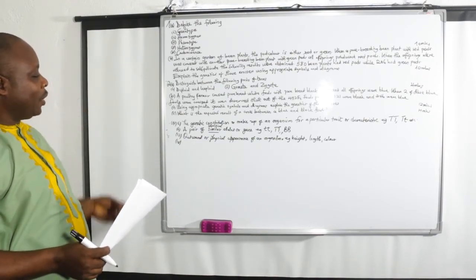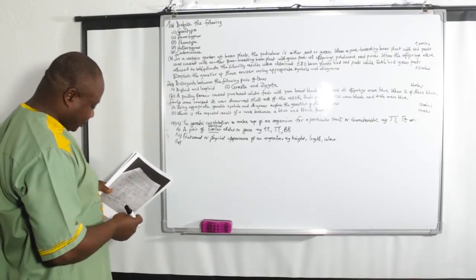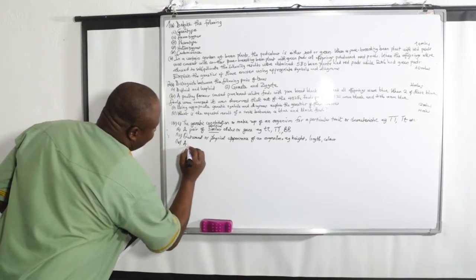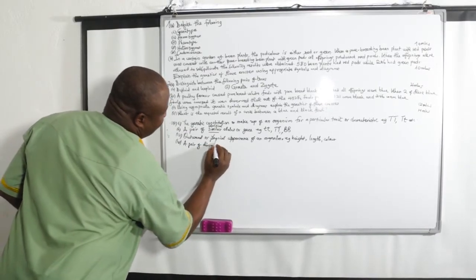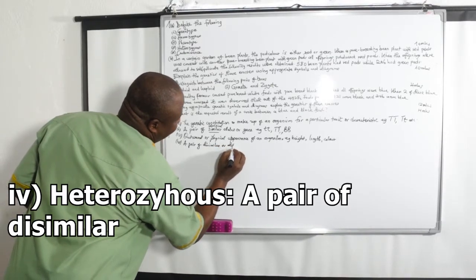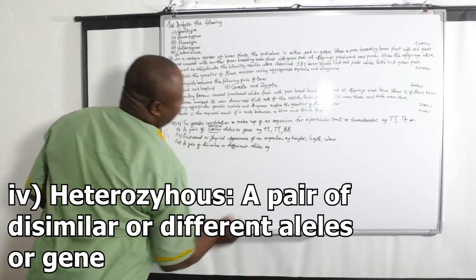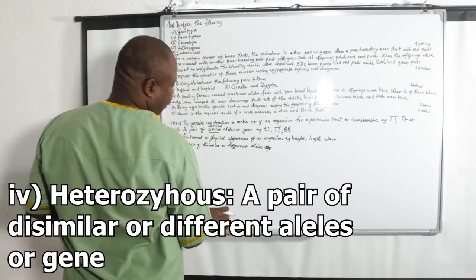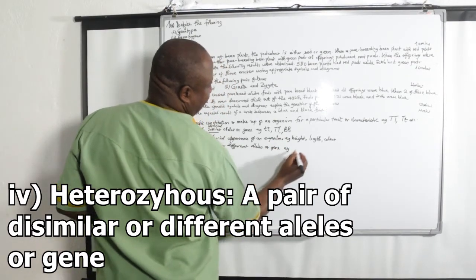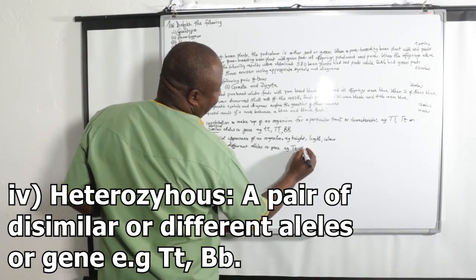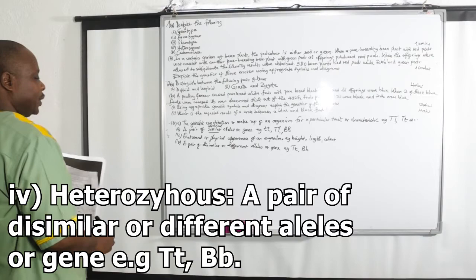Sub-question 4 — heterozygous. Heterozygous refers to a pair of dissimilar or different alleles or genes. For example, capital T small t, or capital B small b. They are not the same — dissimilar.